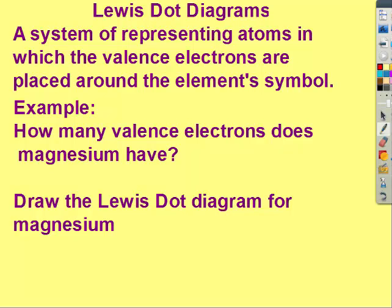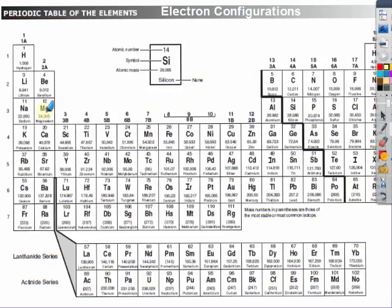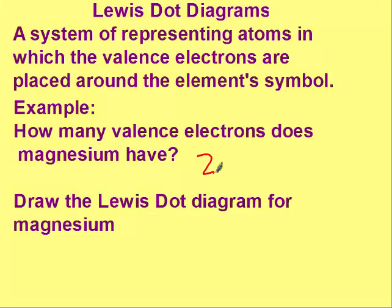Another way that we could represent electrons was a Lewis dot diagram. A Lewis dot diagram places the valence electrons around the element's symbol. So first we have to figure out how many valence electrons magnesium has. Magnesium is here, so it has 2 valence electrons. And so to draw the Lewis dot diagram, you draw the symbol and you put your 2 dots.